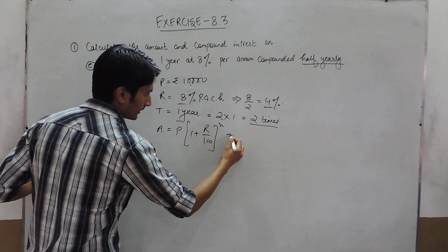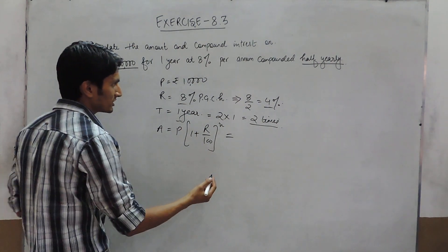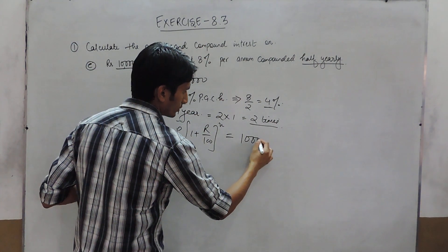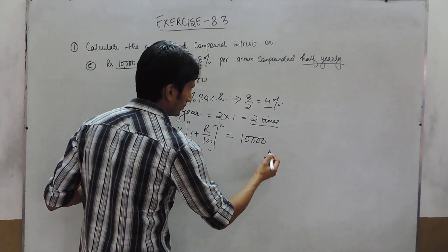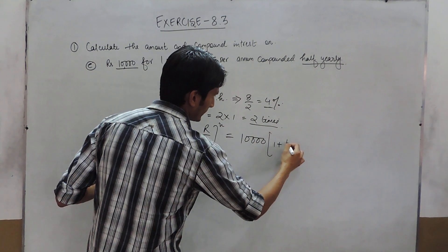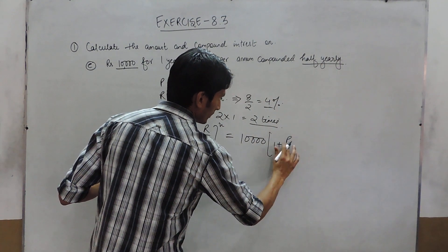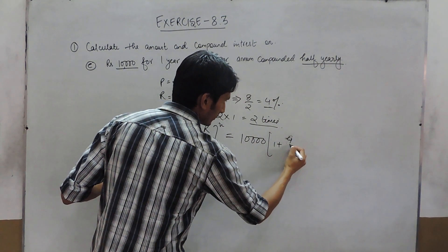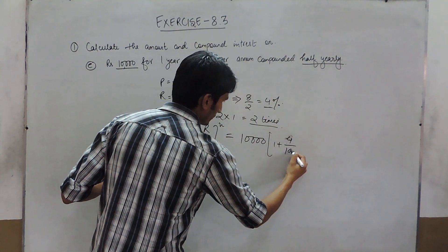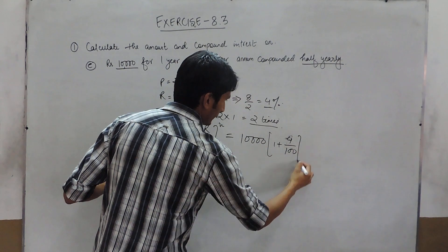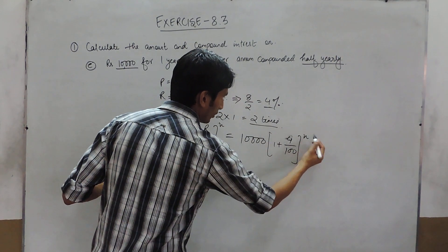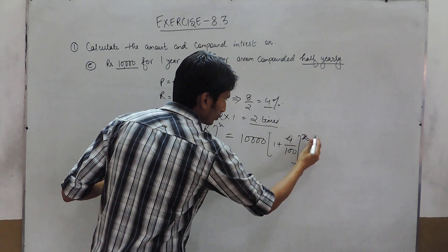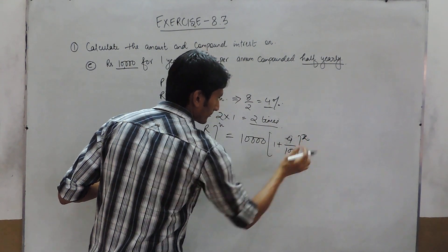Here the value of principal is 10,000, and 1 plus 4% upon 100, and the time is 2 periods.